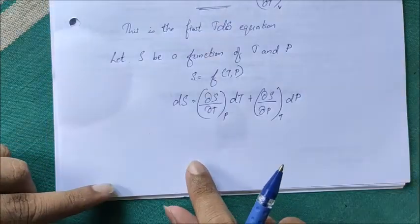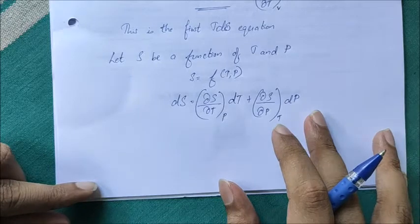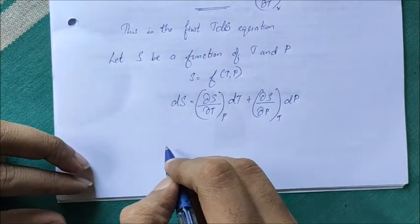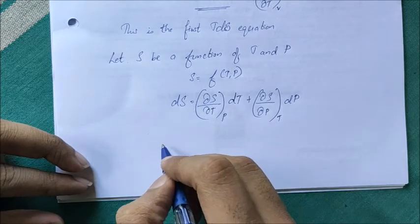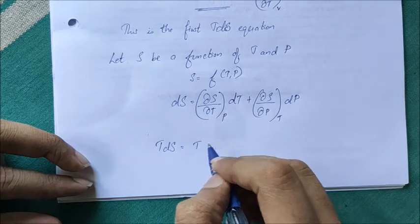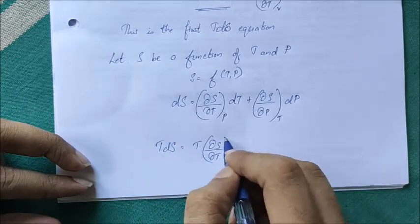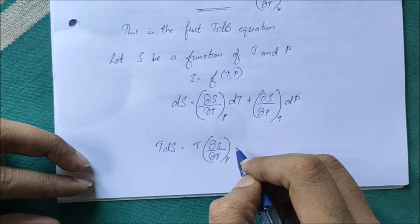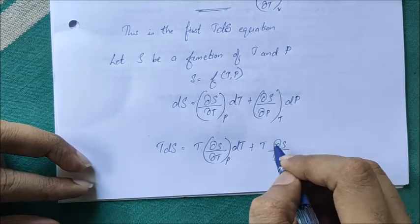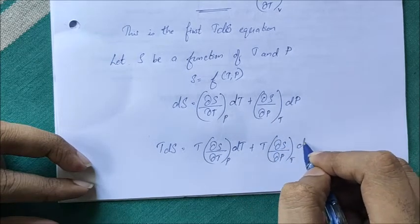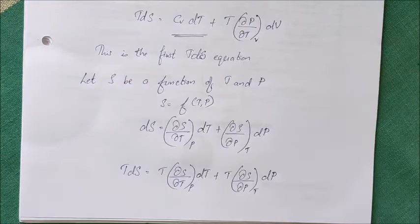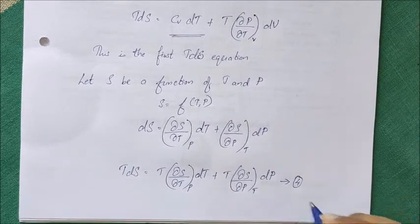Again, multiplying this expression throughout by T, we get T·dS equal to T·(∂S/∂T)_P dT plus T·(∂S/∂P)_T dP. I am calling this expression as Equation 4.